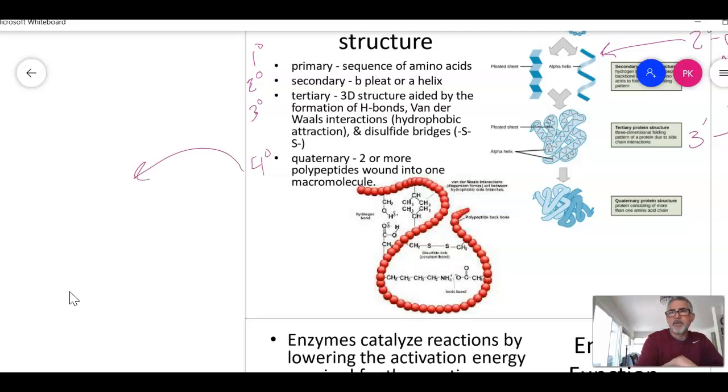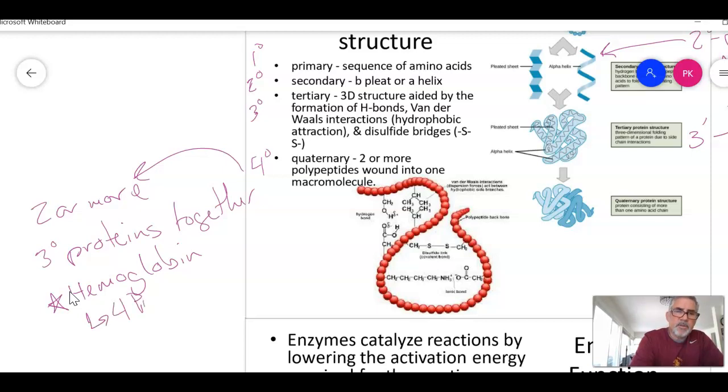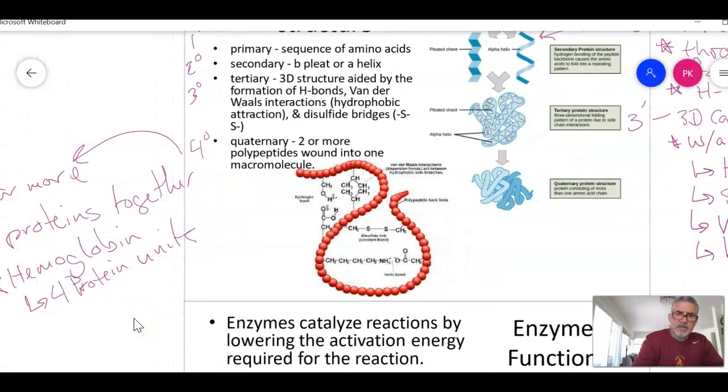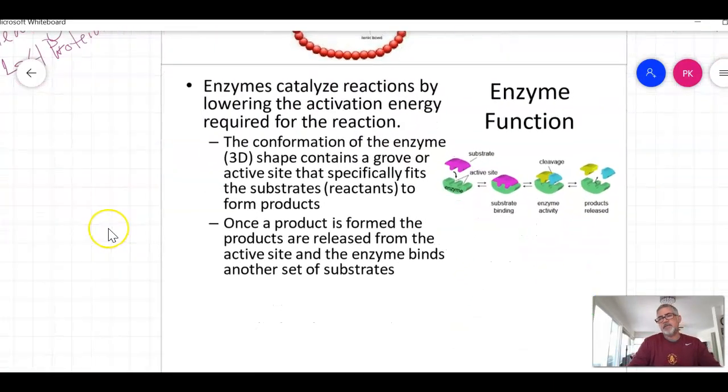And then I have a quaternary structure, and that's two or more tertiary proteins together. Hemoglobin is an example of a quaternary protein, and there are four protein units, so it's four tertiary proteins stuck together in a three-dimensional shape. The important thing here is the tertiary structure is a functional protein. A functional protein must at least have a tertiary structure. That tertiary structure gives proteins their function.